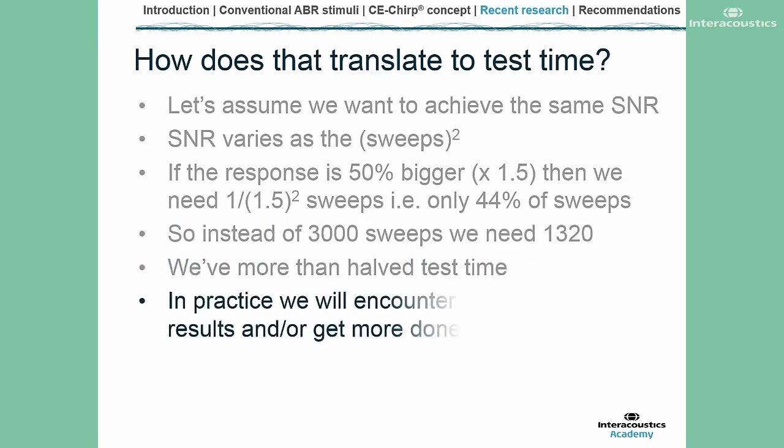In practice, what we'll actually encounter is fewer inconclusive results, or we may get more done. Certainly, if there's a hearing loss present, it's good to be able to move on swiftly to get more results to feed back to the parents. It could also mean shorter test time, though I'm a little cautious on that point — as head of service, we're trying to make sure that the babies are settled. If we cut the test time too much, the baby may not have settled anyway, and using chirps or tone pips wouldn't matter in that case.